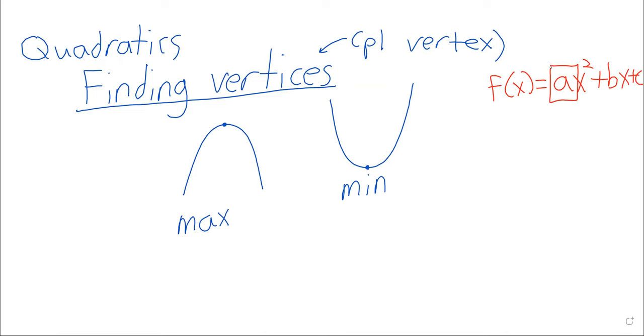When we have this quadratic function ax² + bx + c, it's this number a that's controlling the shape of the graph, and therefore controlling whether the vertex is a maximum or a minimum. If a is positive, the vertex represents a minimum. If a is negative, the vertex represents a maximum.